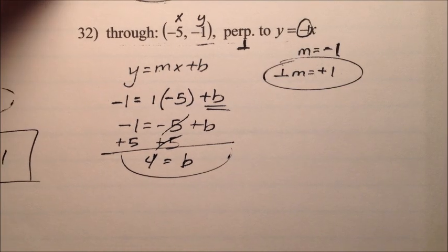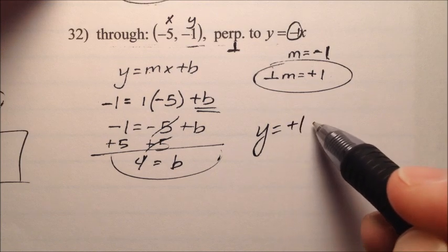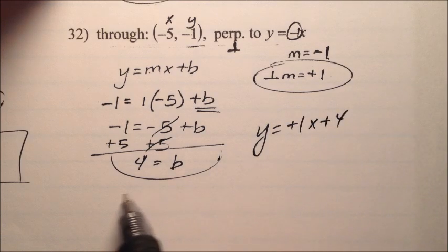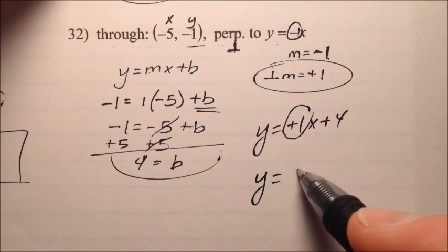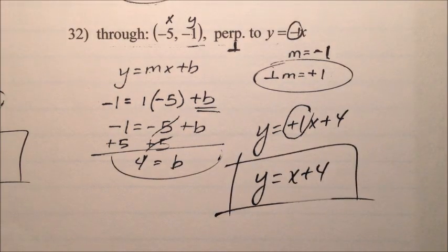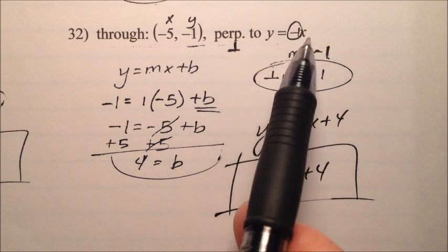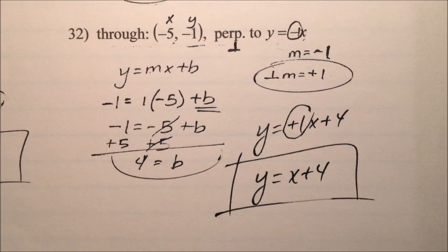So now I can write my equation. I know my slope is a positive 1x, and then plus 4 for my y-intercept, but I don't really want to write that stuff. So I'm just going to write x plus 4, and that will be the solution to number 32, the equation y equals x plus 4, which is perpendicular to my original line and passes through this point, negative 5, negative 1.